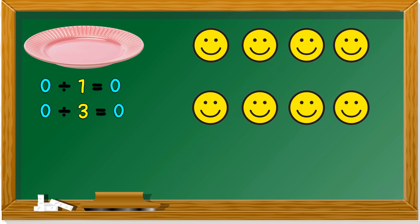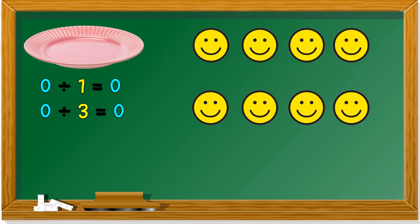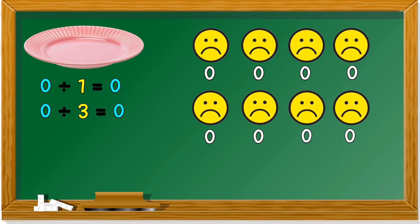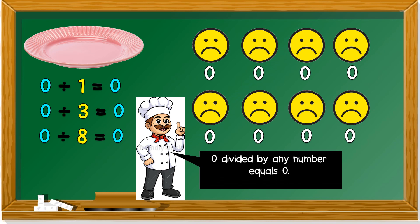How about now? Eight persons — the plate is empty. Zero divided by eight — everyone gets zero. So zero divided by eight is zero. Zero divided by any number equals to zero.